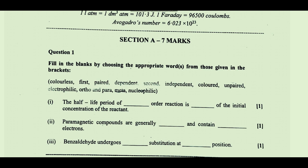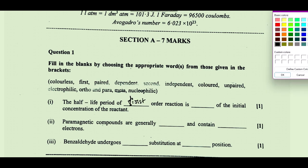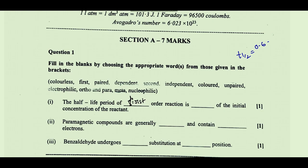One of my students has sent me the question paper, so thank you for that. The first three questions are very easy. The first question: the half-life period of a dash-order reaction is dash of initial concentration of the reactant. For a first-order reaction, the expression is t-half equals 0.693 divided by k. That means the order of the reaction is independent of initial concentration, so the answer is 'independent.'